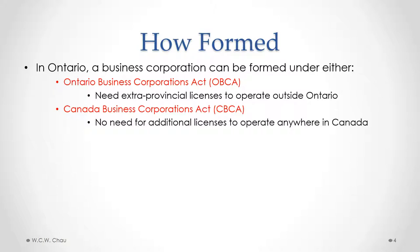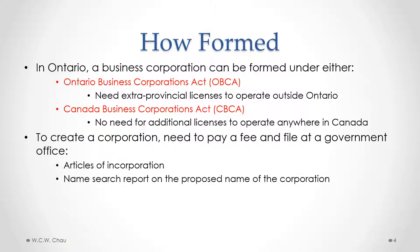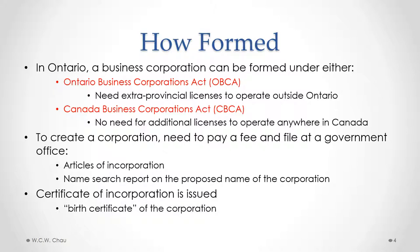Once you've decided to form an OBCA or CBCA corporation, the next step is to pay the appropriate fee and file various documents at the appropriate federal or provincial government office. What you need to file is a document called articles of incorporation, and you also need to file a name search report on the proposed name of your corporation, which will indicate whether or not that proposed name is already being used by someone else. Once you've filed those documents along with the fee, a certificate of incorporation is issued — that marks the birth of the corporation, like the equivalent of a birth certificate.